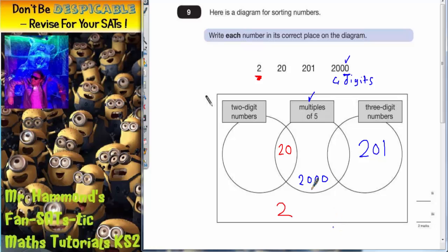And that's it. The number 2 fits into none of the categories. The number 20 is a 2 digit number and a multiple of 5. The number 201 is just a 3 digit number. The number 2000 is just a multiple of 5.